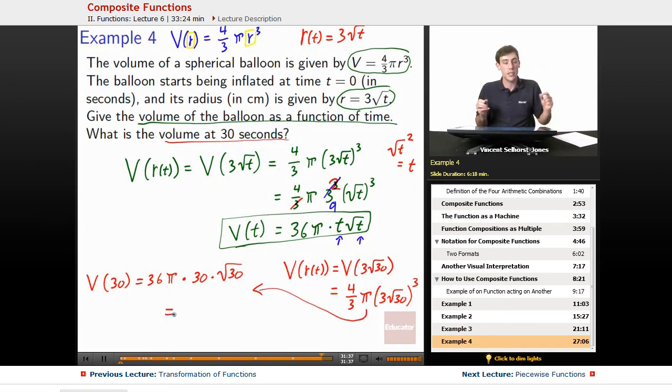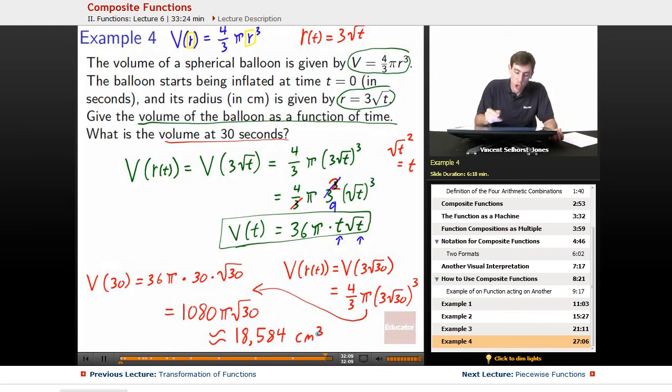So let's just fold them together. 36 pi times 30 times root 30, that winds up equaling 1080 pi square root of 30. And if we want to get this as an approximate value, something that we could actually know a number as opposed to just having symbols that are precise and accurate and exactly correct, but hard to actually grasp as a single number and know what we're talking about, we could get a pretty close thing and we could round this to 18,584 using a calculator.